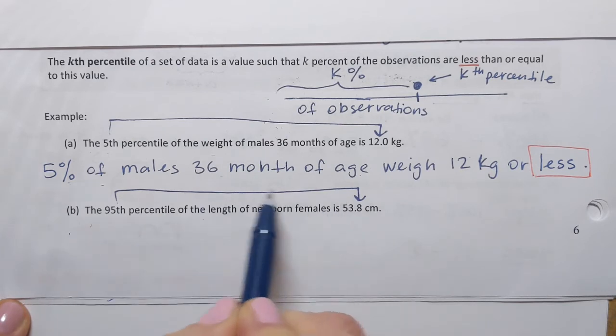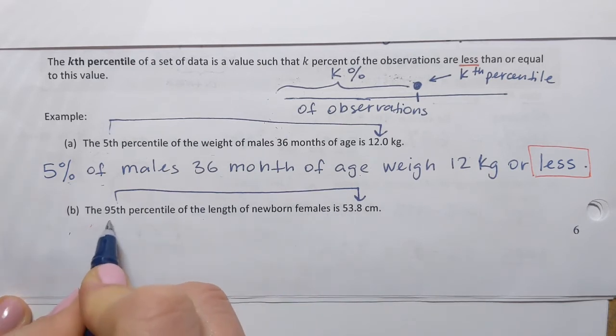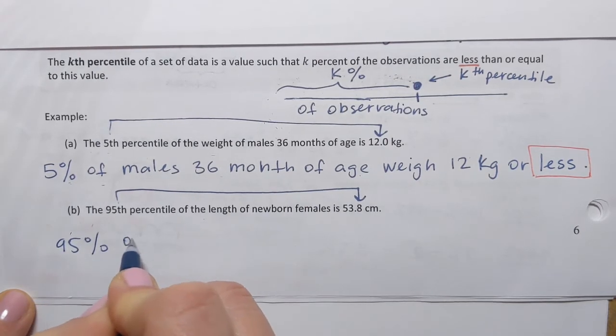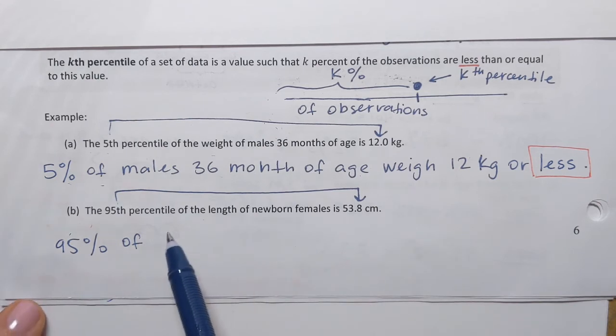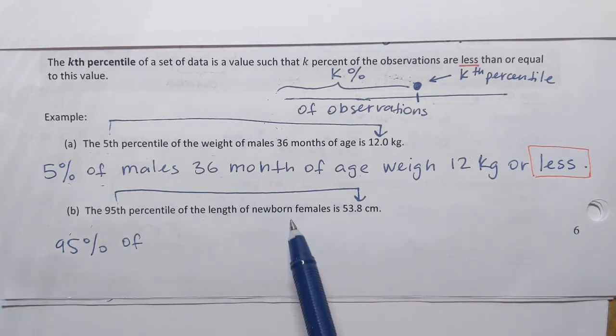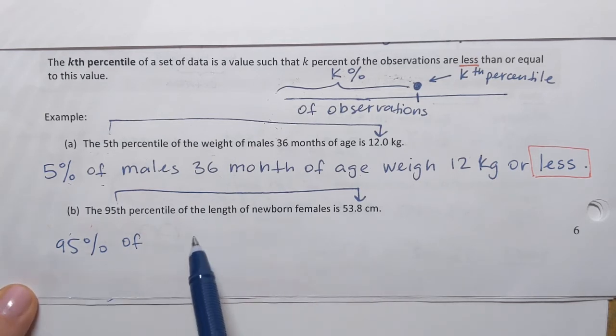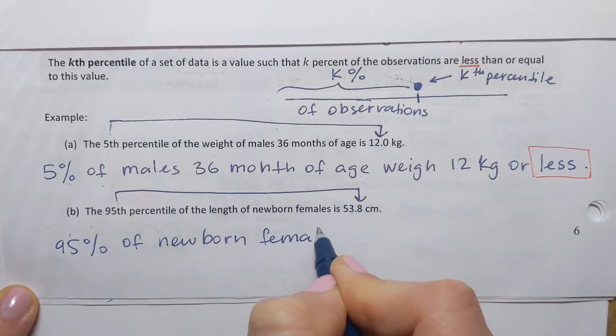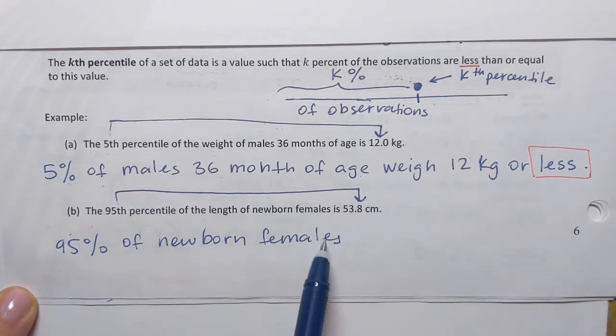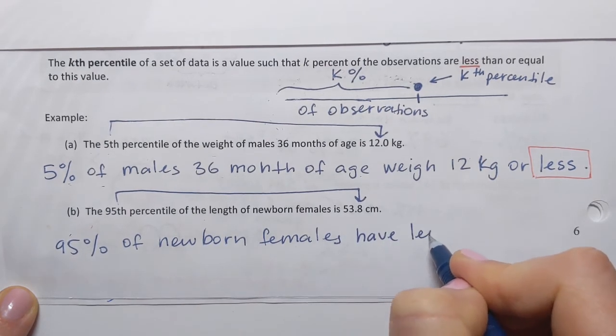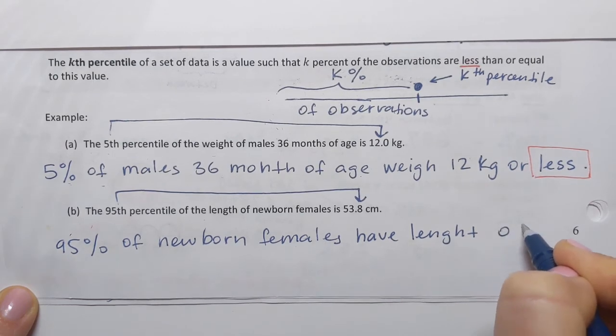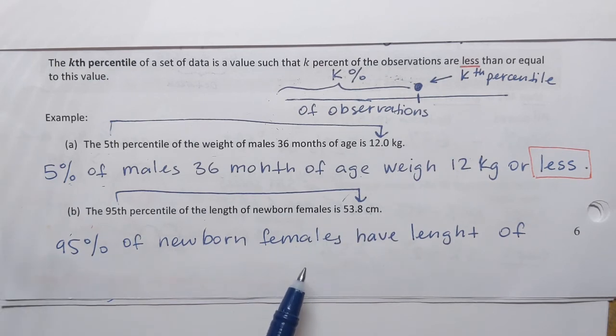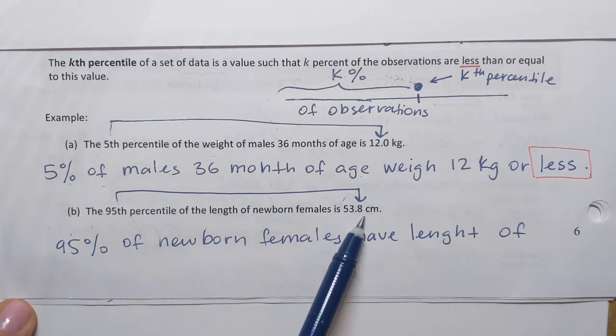And to interpret this percentile we're gonna convert 95th percentile into a percentage. So it's gonna be 95% of. Then we have to describe population or sample. Again not specified here but in general we're dealing with newborn females. So 95% of newborn females have length. What kind of length? Have length of, well, that or less. So 95% of newborn females have length of 53.8 centimeters or less.